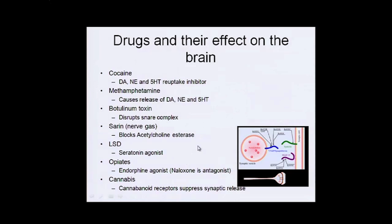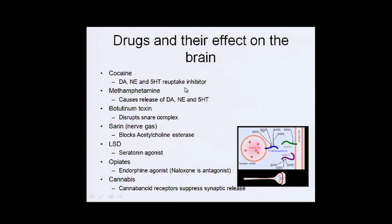From that you can start to see what some drugs are doing when they're affecting people's brains. For example, cocaine is a dopamine, norepinephrine, and serotonin reuptake inhibitor. These neurotransmitters are cycling, so if the reuptake or cycling stops, then you run out of neurotransmitter and it blocks whatever those pathways were doing.